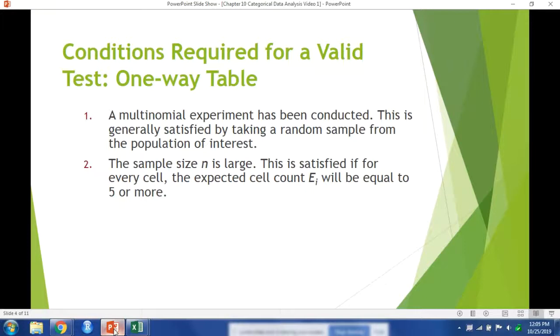The basic assumptions to run a chi-squared test are that a multinomial experiment has been conducted. This is generally satisfied by taking a random sample from the population of interest. Second is the sample size n is large. That is satisfied if for every cell or class the expected cell count will be equal to five or more. So remember that for your homework.